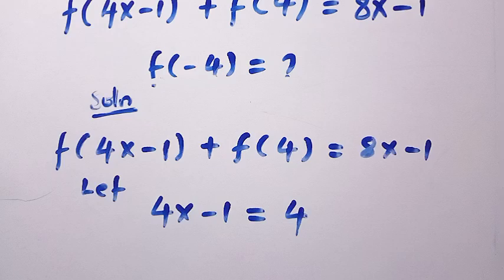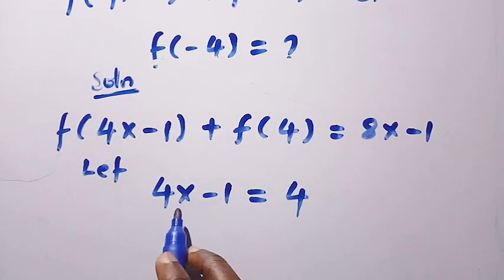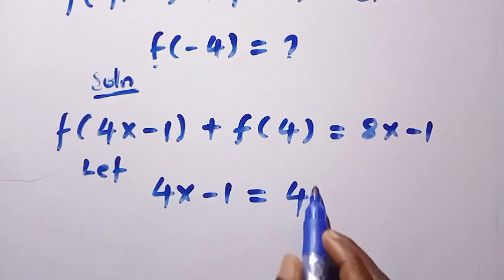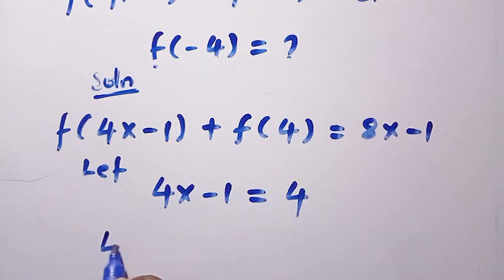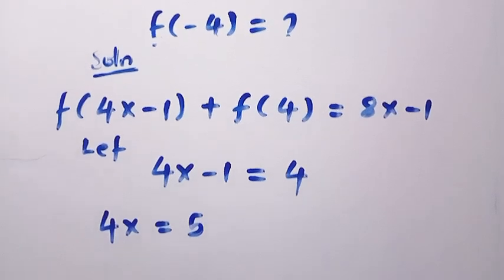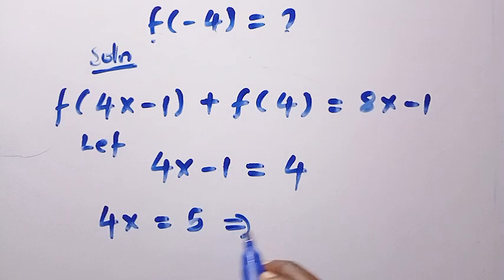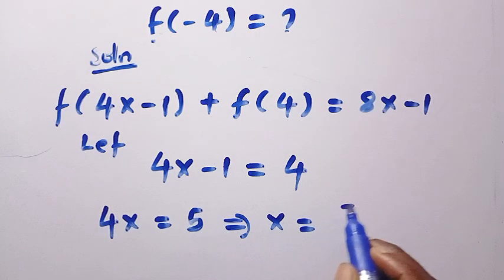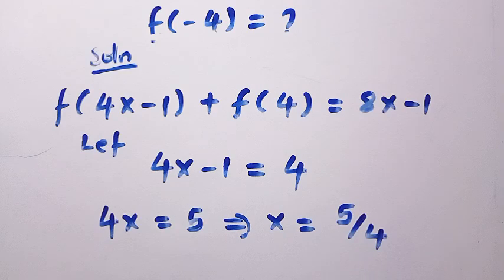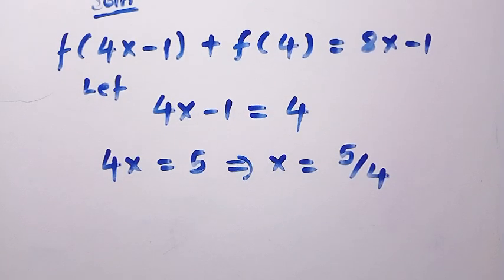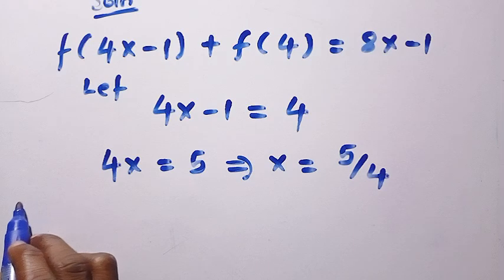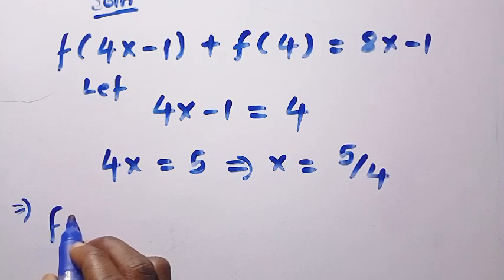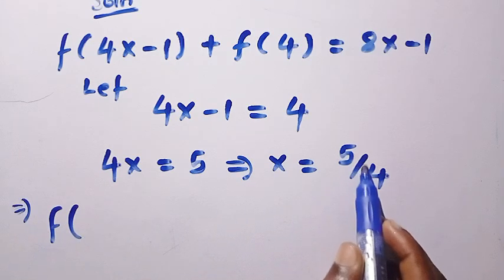then I want to make x the subject of the formula. We transfer 1 to the other side, so we have 4x equals 5, which implies that x equals 5 divided by 4. And if x equals 5 divided by 4, we substitute back.